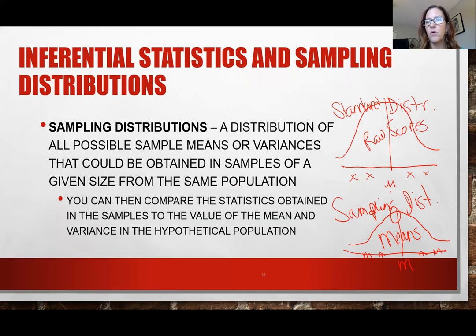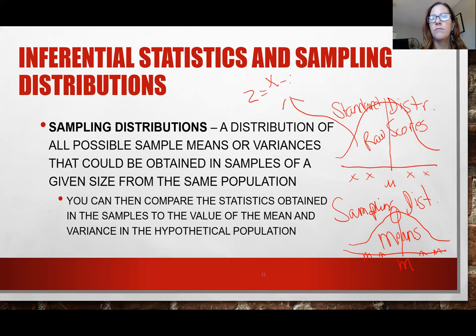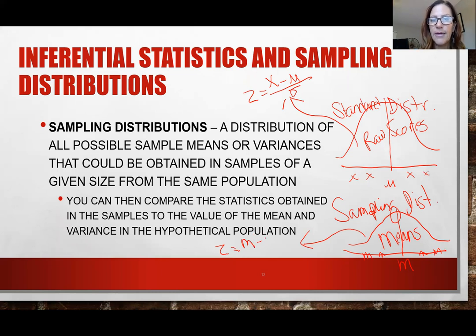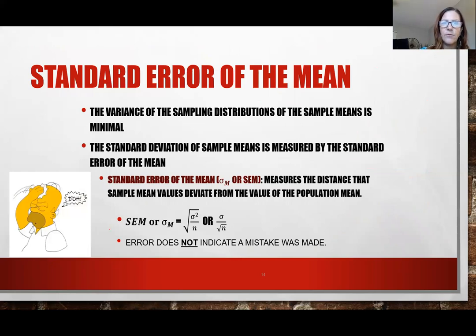We're going to use the standard error of the mean to find probabilities. When we had raw scores, we found Z scores using Z = (X − μ) / σ. Now for sampling distributions, it's Z = (M − μ) / SEM — we replace the raw score X with the sample mean M, and replace the standard deviation with the standard error of the mean.